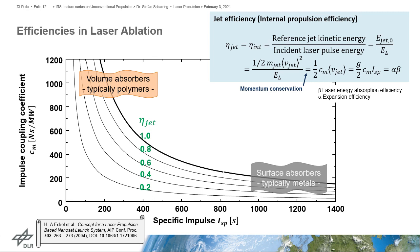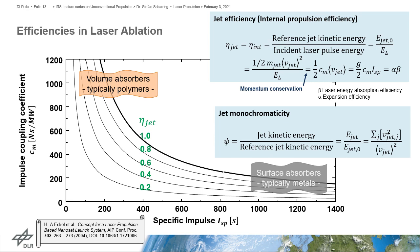If one keeps the jet efficiency constant, it is visible from this graph here that one obtains a hyperbolic relationship between the impulse coupling coefficient and the specific impulse. Metals typically have a high Isp but low momentum coupling. With polymers, one has high thrust but low specific impulse. As a side note here, there is as well the jet monochromaticity. And this gives the ratio of real-to-reference kinetic energy. This can be used to define the ablation efficiency. And this is rather a physical figure of merit, whereas the jet efficiency is more an engineering number.